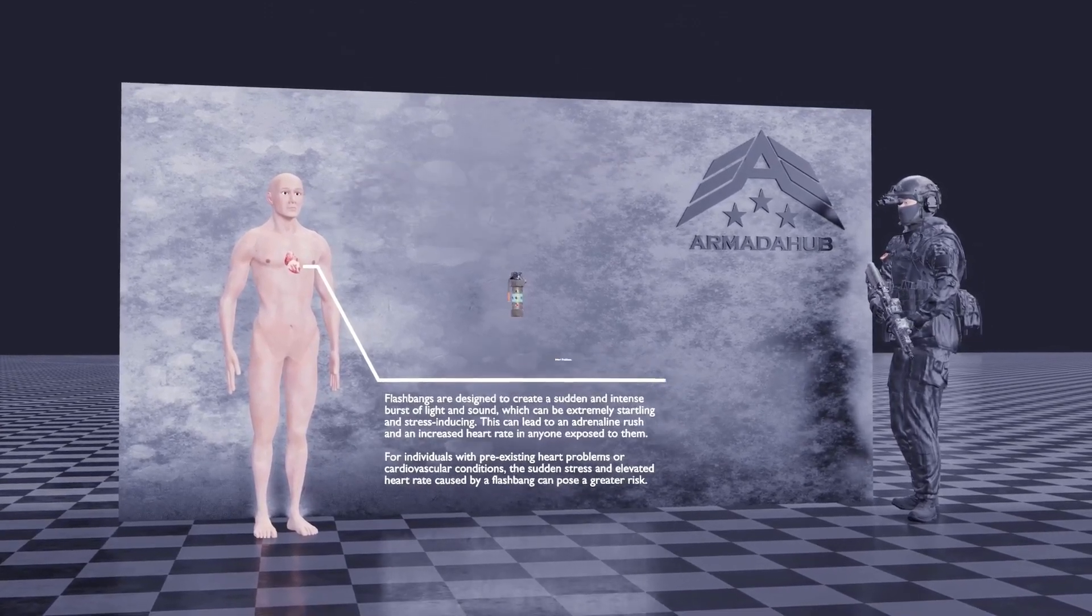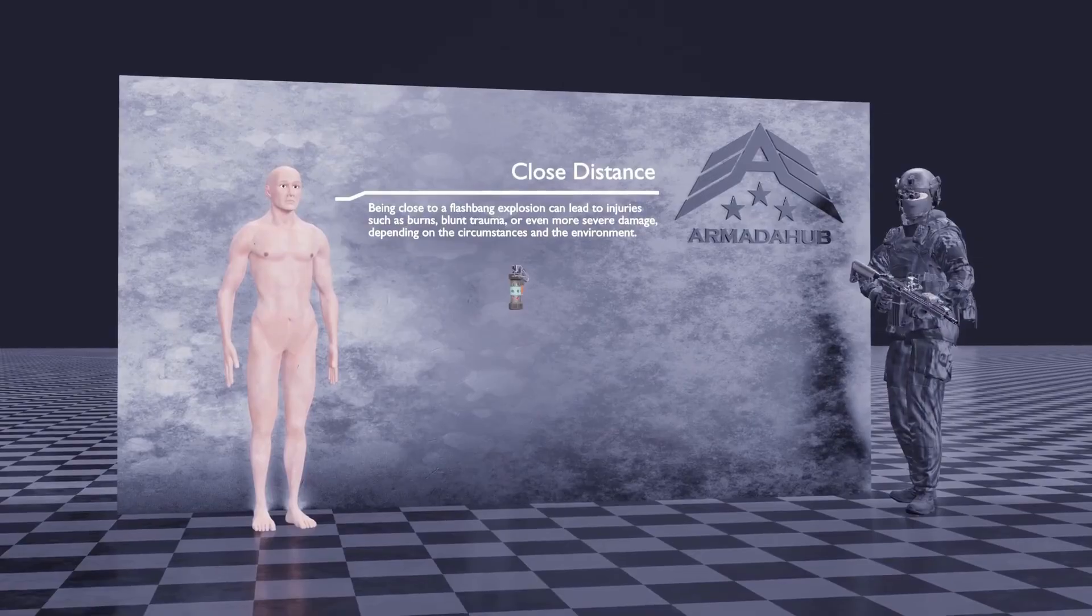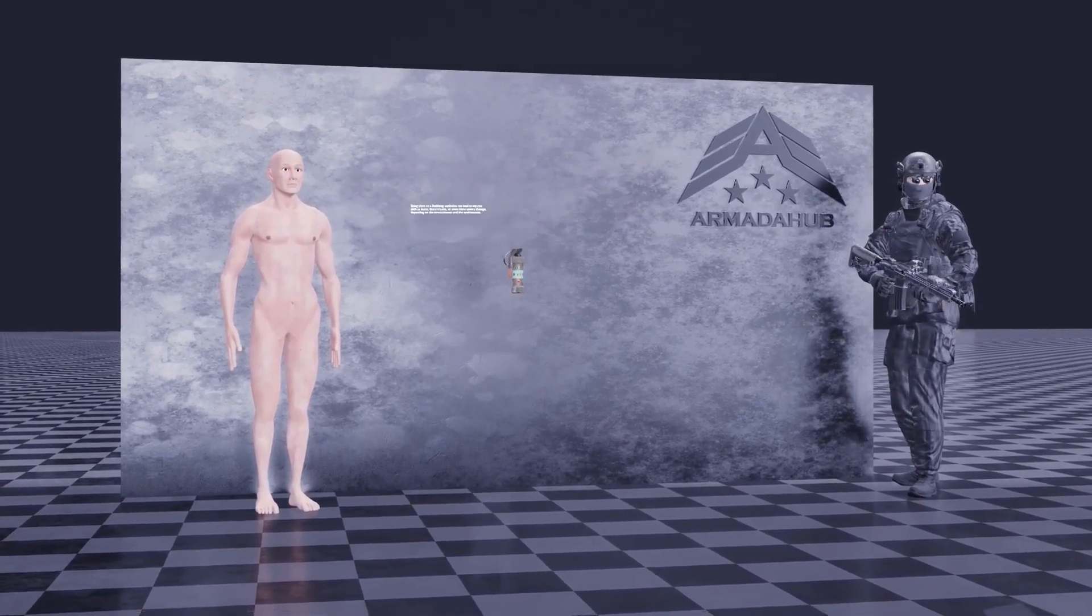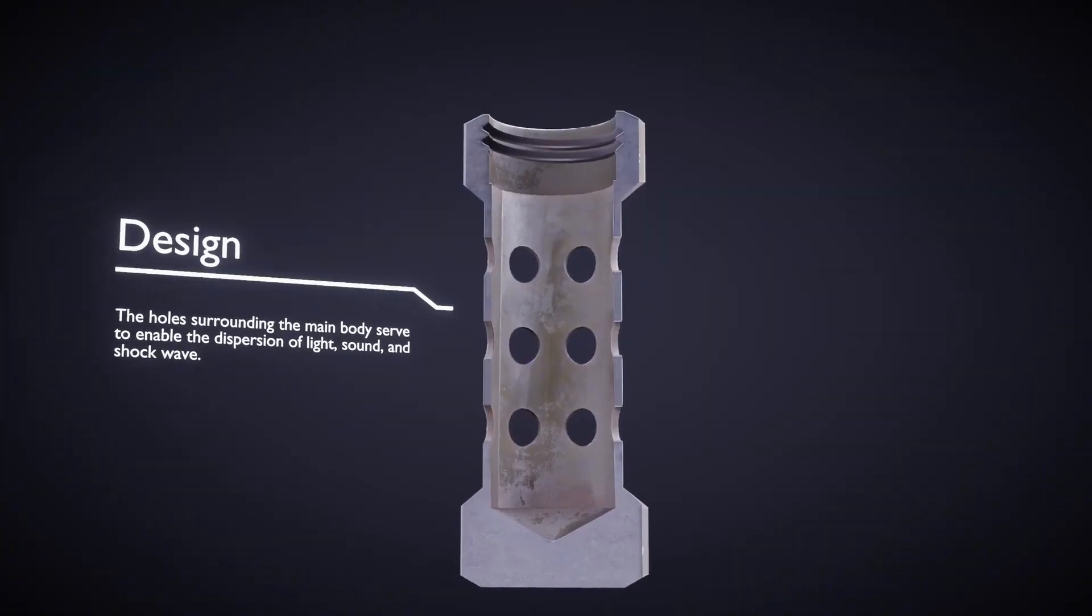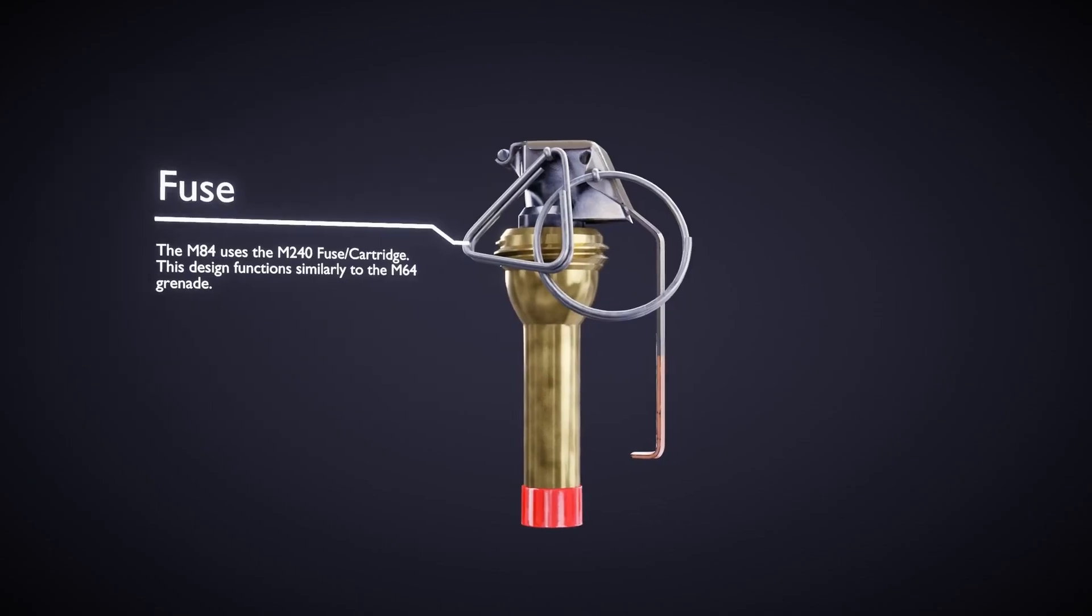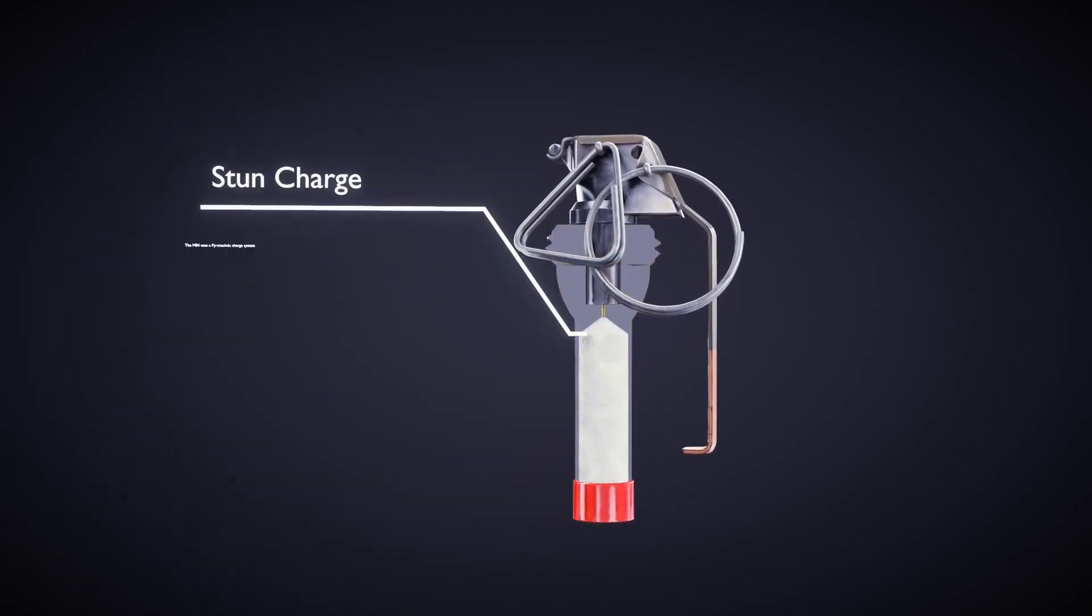At the end of this delay, the burning element reaches the detonator or igniter, composed of materials such as lead styphnate and lead azide. These compounds burn rapidly, triggering the final detonation of the grenade.